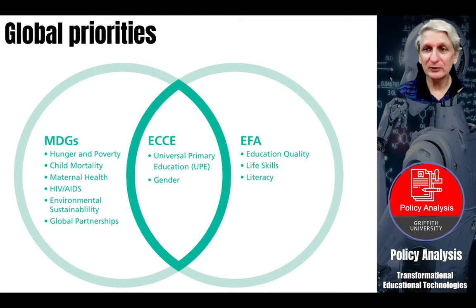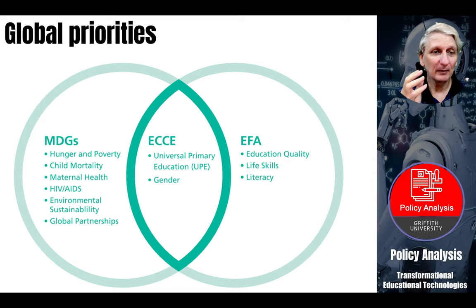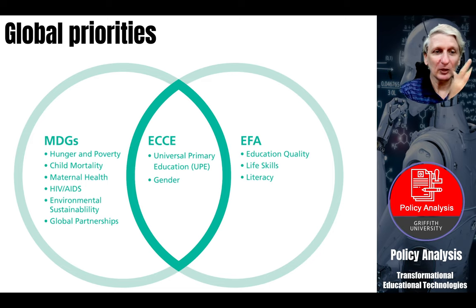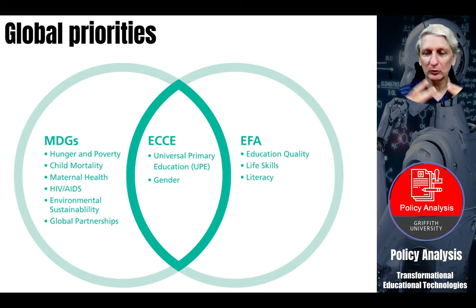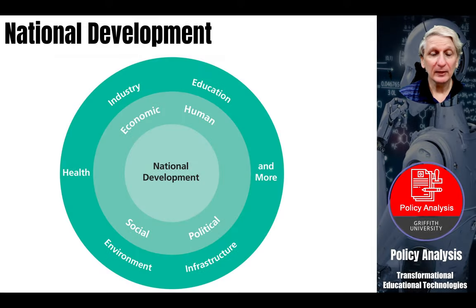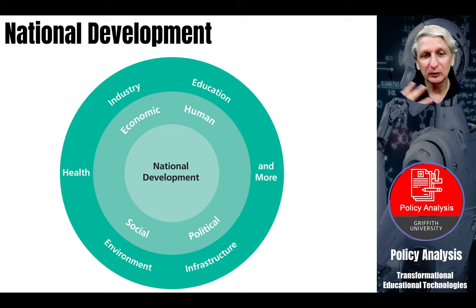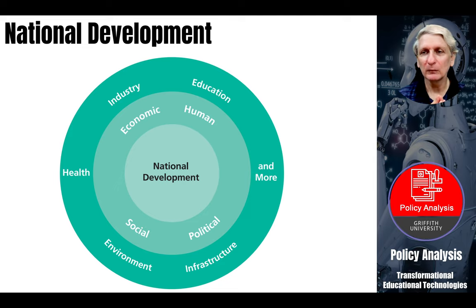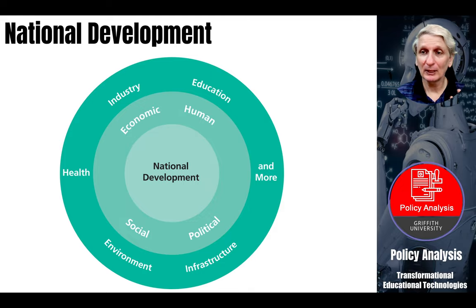The global priorities often have intersections — they sometimes address different issues and sometimes very similar ones. For example, the Millennium Development Goals address gender and so do the ECCE goals. Education for Action goals don't include things such as hunger and child mortality and maternal health because they're more focused on education. But there's often a fair bit of overlap between these overarching goals. Within a nation, you've got various social, economic, human and political issues, and beyond that there are sectors around health, infrastructure, the environment and industry. How education fits in with all of those becomes important, particularly when we look at stakeholders, because stakeholders can often be drawn from areas other than just education.